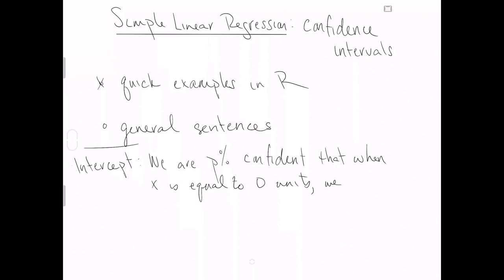We expect y to be between lower bound, whatever it is, and upper bound units. So you fill in lower bound and upper bound based on the data you have, based on the confidence intervals you asked R to calculate for you.